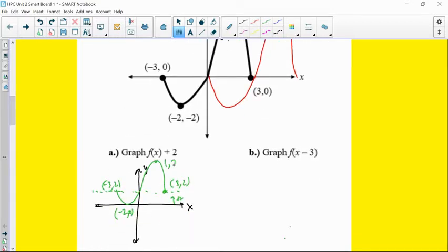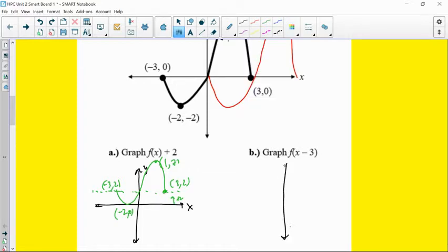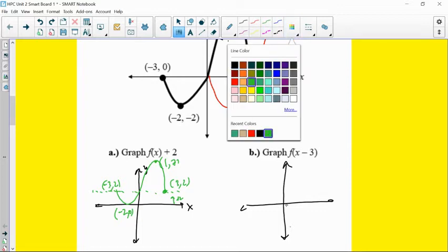On a quiz, I'd expect you to label those points as well so it shows me that you know what's happening. And if we go ahead and graph the second one here, we said that's a transformation to the right 3 units. So I'm trying to get this image of this red graph that I sampled.